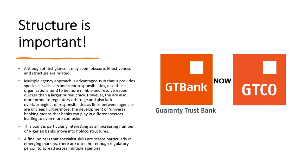Structure is important. Although at first glance it might seem obscure, effectiveness and structure are related. The multiple agency approach is advantageous in that it supplies specialist skills and clear responsibilities for each agency. The organisations also tend to be more nimble and resolve issues quicker than a larger bureaucracy. However, they are also more prone to regulatory arbitrage, because with so many agencies, banks can wiggle between the cracks. There's also overlap of responsibilities.